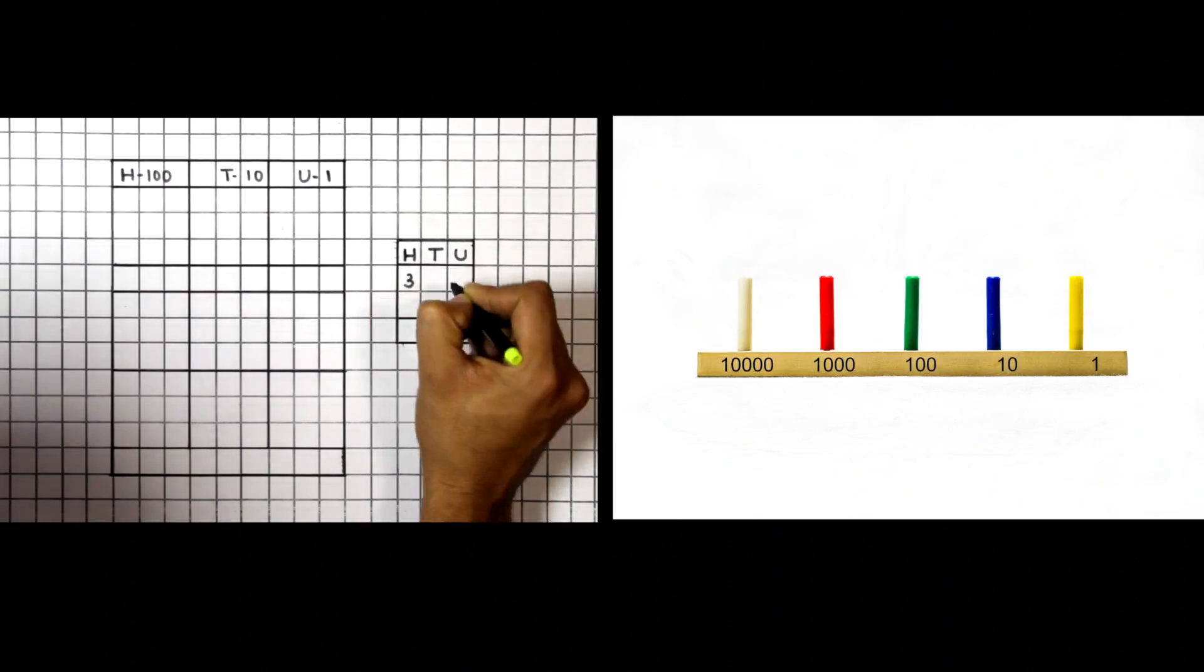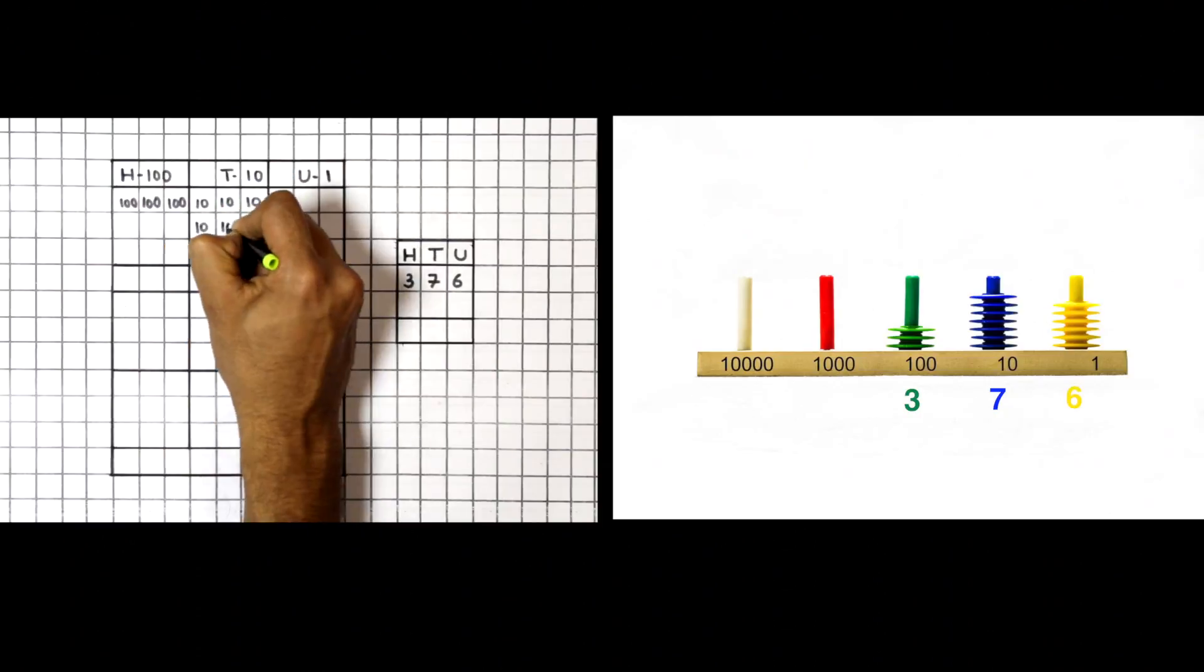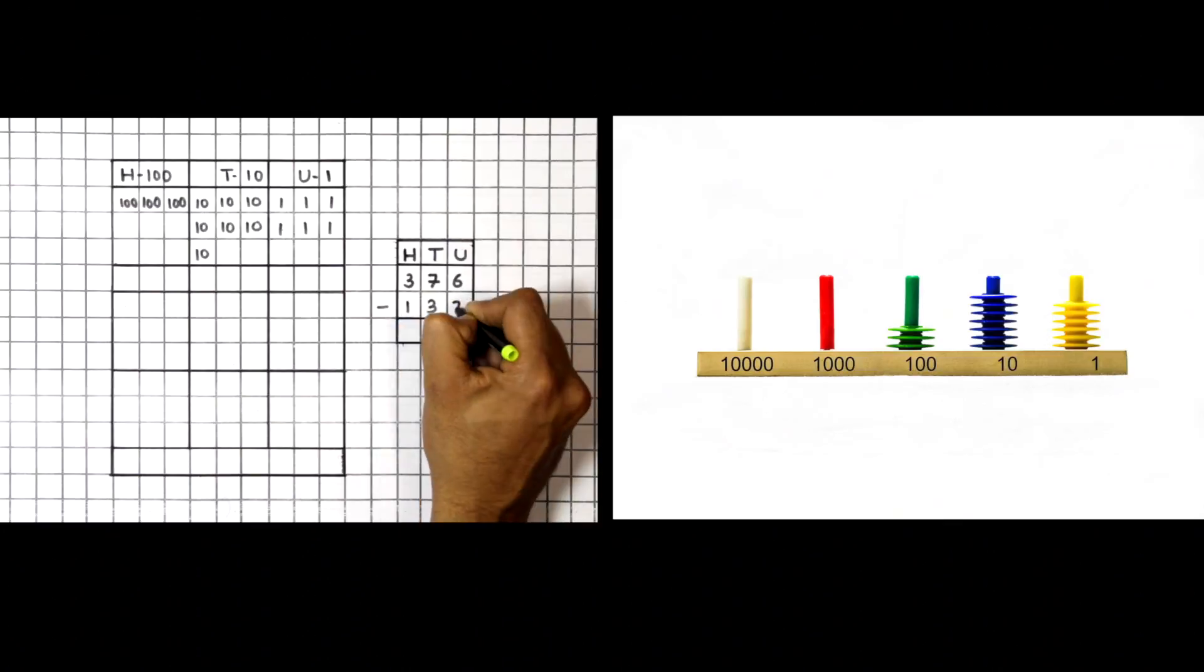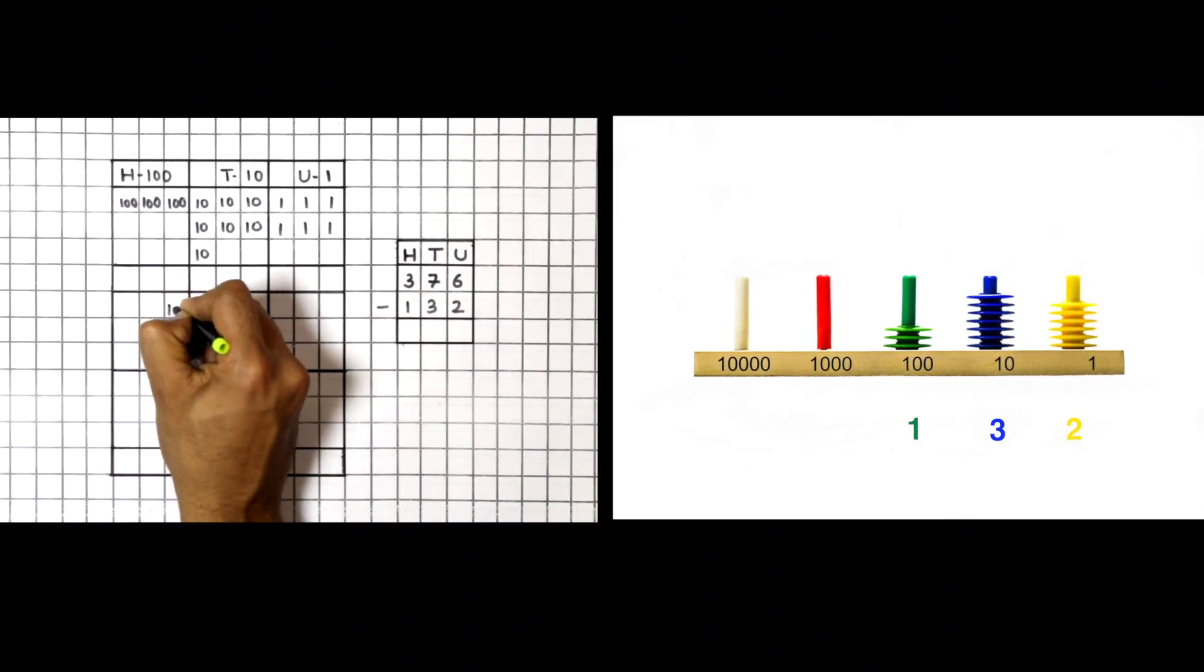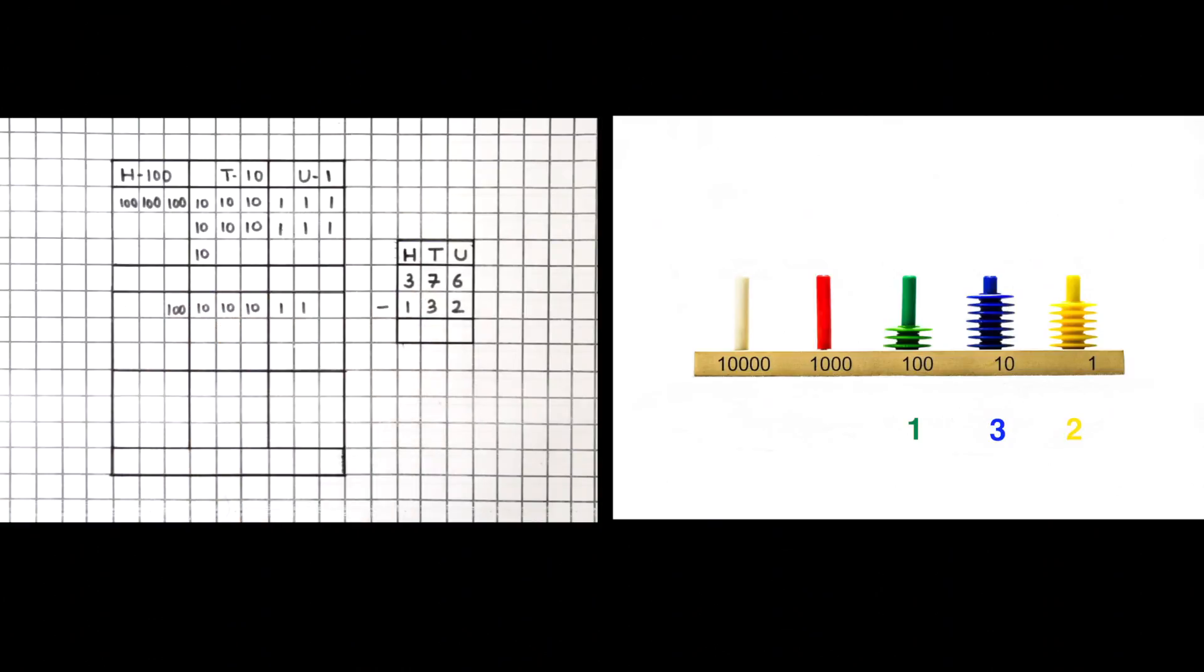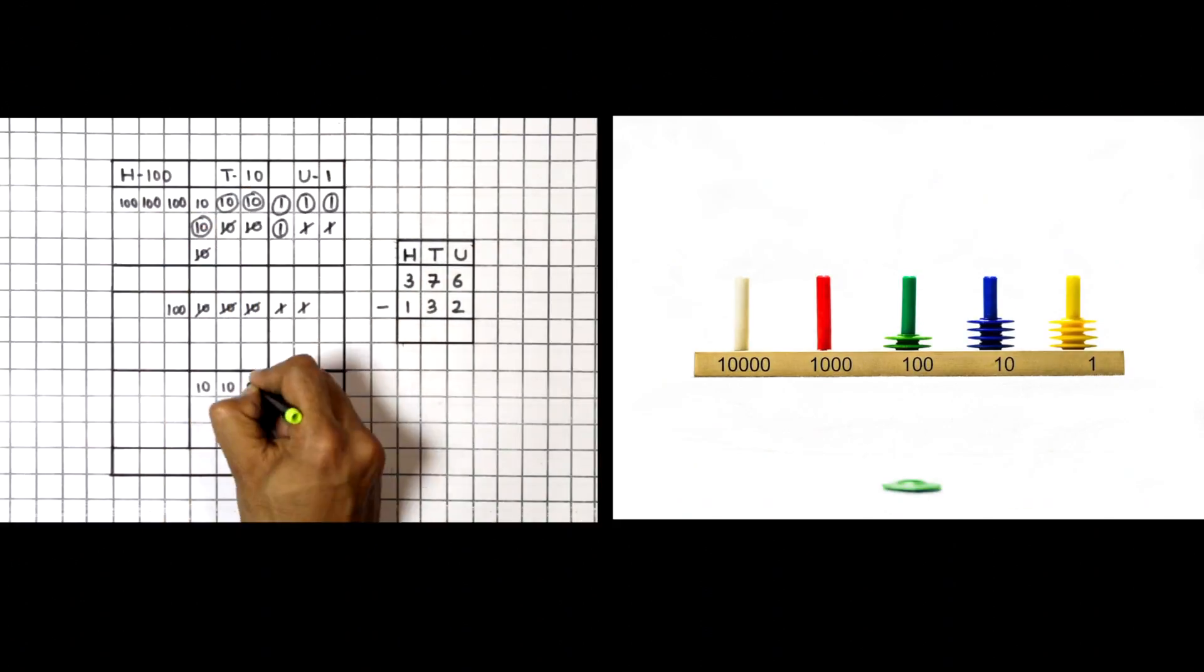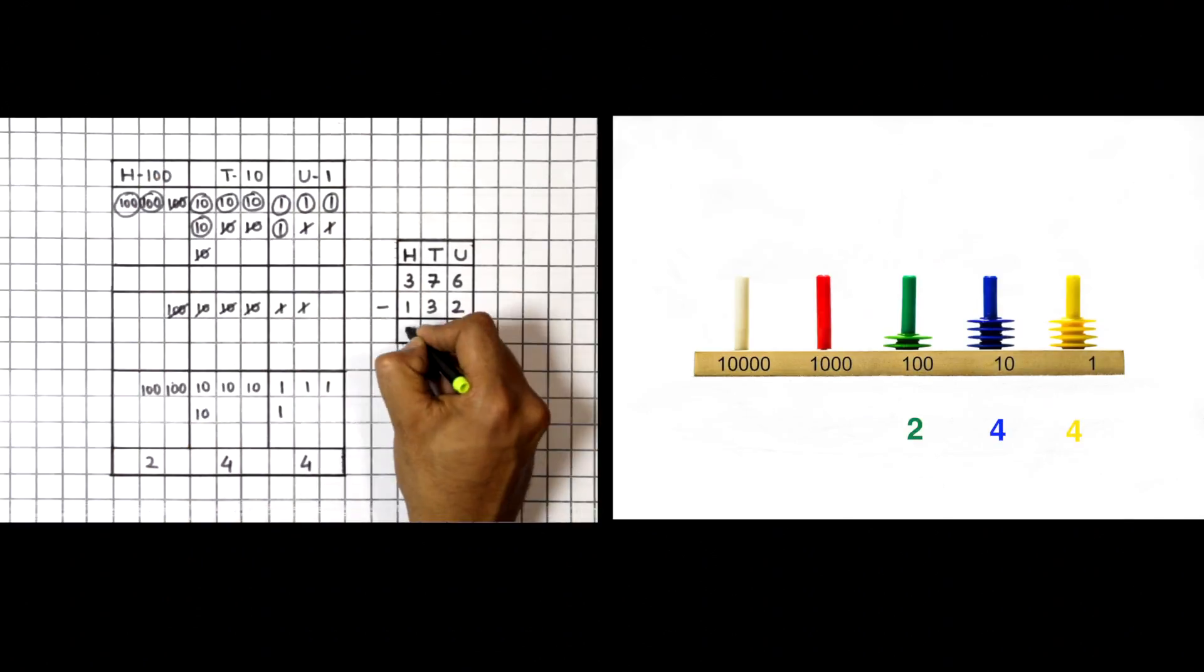376 is 3 hundreds, 7 tens and 6 units. Take away 132 which is 100, 3 tens and 2 units. Start from the units place. Then proceed to the tens place and the hundreds place. We are left with 2 hundreds, 4 tens and 4 units which is the difference.